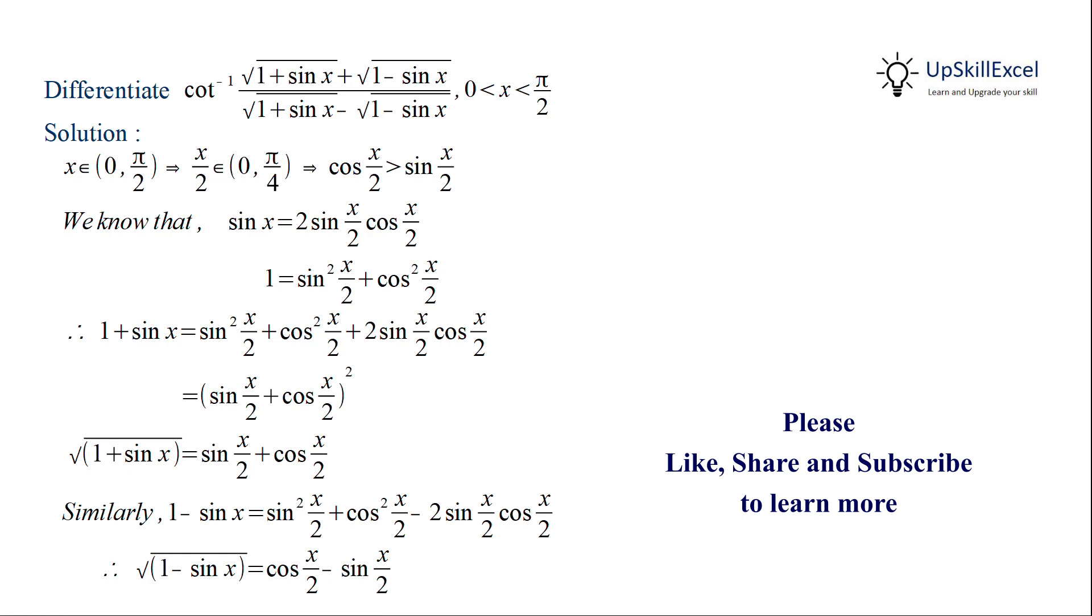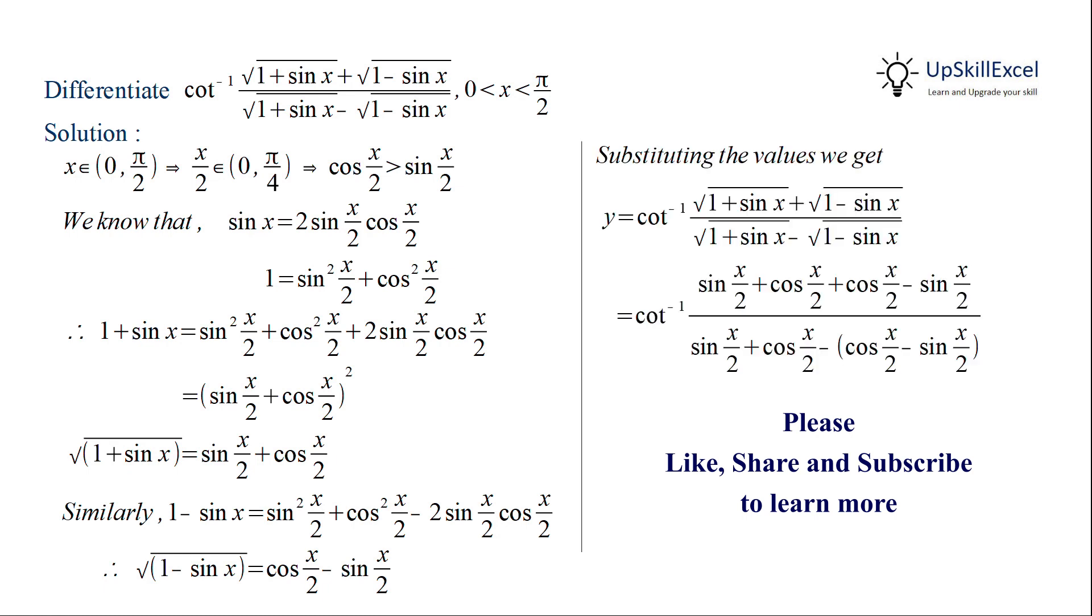Now we can substitute both the terms in the cot inverse function. After substitution, we get 4 terms in the numerator and 4 terms in the denominator.